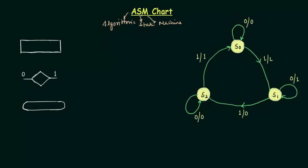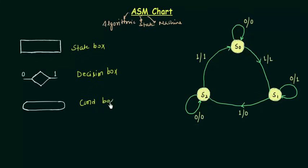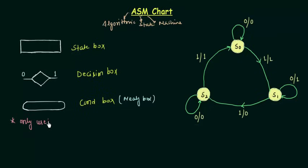The first component is the state box — this rectangular one. The second is the decision block. The third one we call the condition box. This third box is only used in Mealy state machines, which is why it is sometimes called the Mealy box. One very important point: it is only used when the output is high.